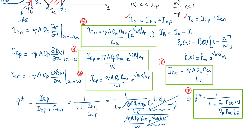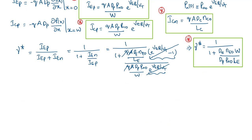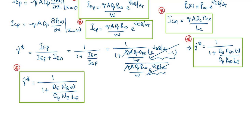Gamma-star can be rewritten in terms of doping concentrations instead of minority carrier concentrations. Gamma-star approaches 1 if N_B / N_E is as small as possible. That is why N_E is made very high compared to N_B. Additionally, to improve injection efficiency, W must be made as small as possible — that is the reason the base width is kept very small.